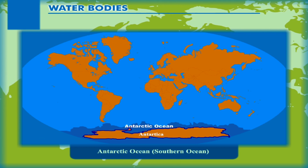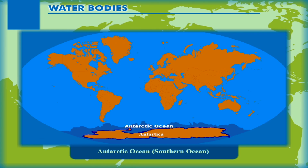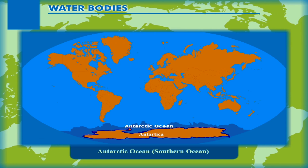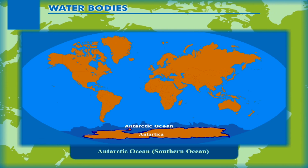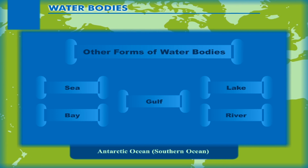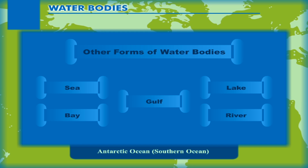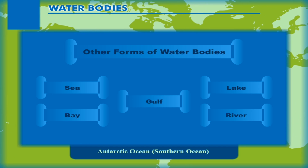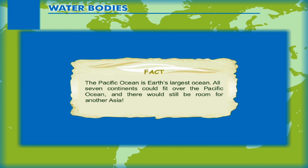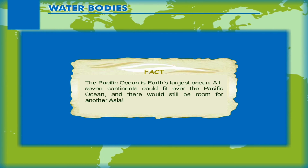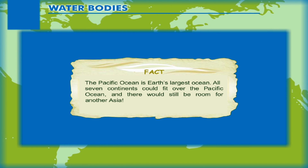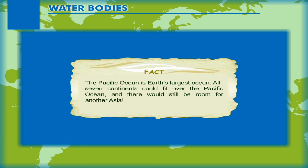Antarctic Ocean (Southern Ocean): It surrounds the continent of Antarctica at the South Pole. It is also considered as an extension of the Pacific, Atlantic, and Indian Oceans, and is referred to as the Southern Ocean. Other forms of water bodies present on the earth's surface are sea, bay, gulf, lake, river, etc. Fact: The Pacific Ocean is earth's largest ocean — all seven continents could fit over the Pacific Ocean and there would still be room for another Asia.